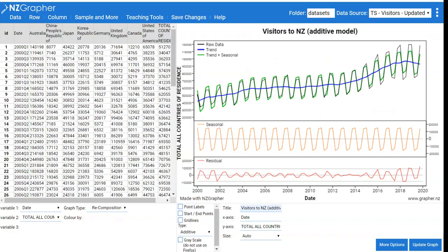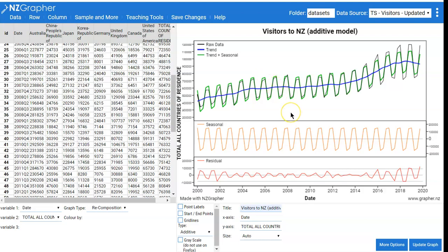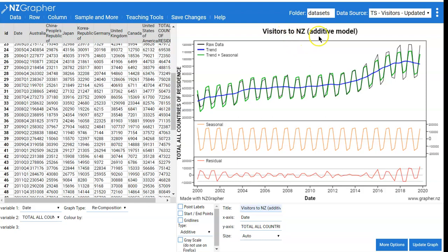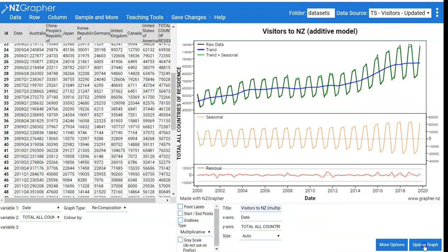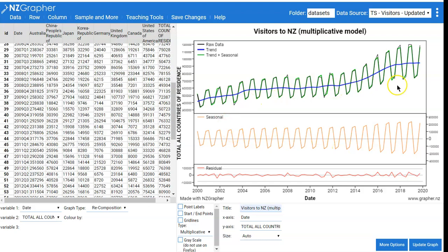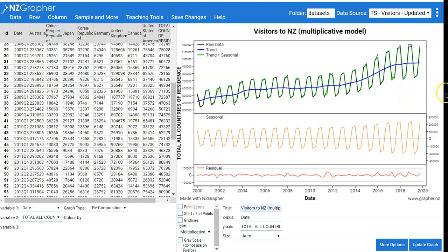I'll just quickly show you on NZGrapher where to do those things. Here's the original visitors to New Zealand additive model. If we go down here, we can select to do a multiplicative instead. I will then change that title to be the multiplicative model and update my graph. And there you can see we've got that second graph that I showed you.